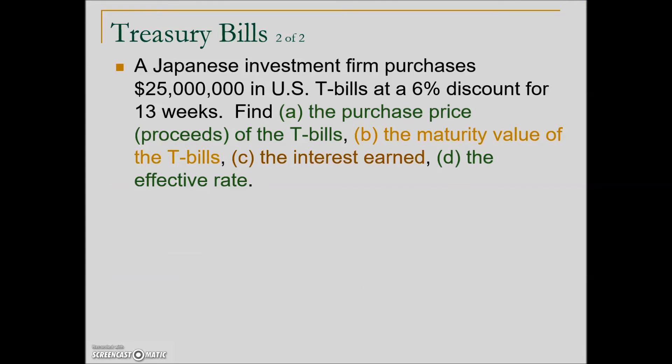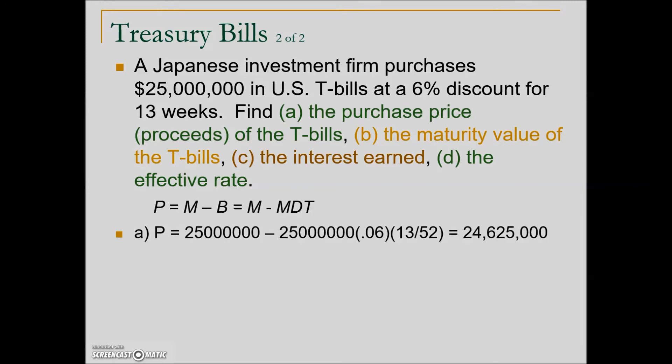We have a second example. A Japanese investment firm purchases $25 million in U.S. T-bills at a 6% discount for 13 weeks. We have a series of requests: find the purchase price or proceeds, and so on. You have to put yourself in the position of how the United States is actually the borrower, and in this case the Japanese investment firm is the banking institution or the lender.